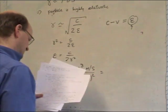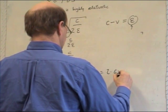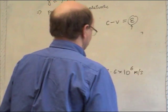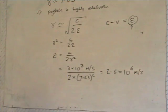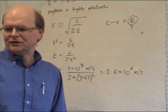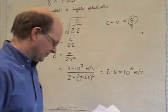And you get 3 times 10 to the 8 meters per second divided by 2 times 7.63 squared. And the answer, I believe, comes out at about 2.6 times 10 to the 6 meters per second. Sounds like a large number, but remember that the speed of light is 3 times 10 to the 8 meters per second.